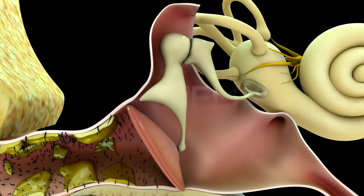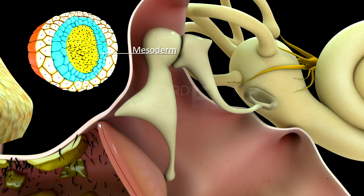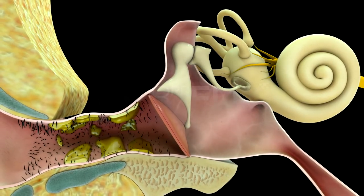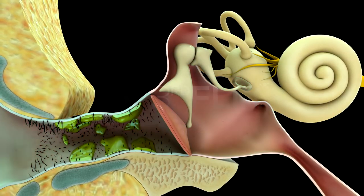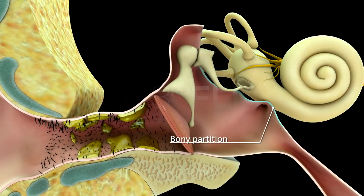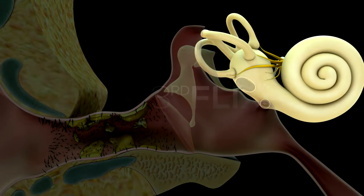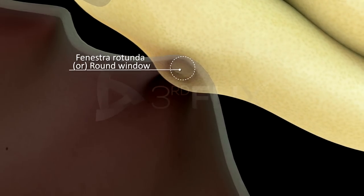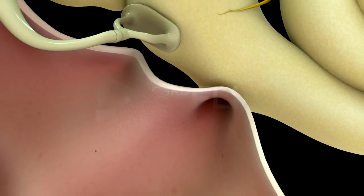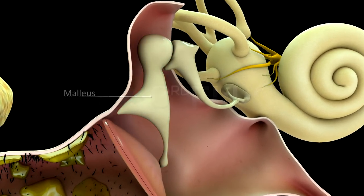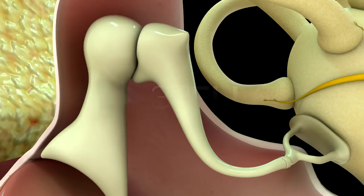The middle ear, or tympanic cavity, is derived from mesoderm. It is a small, air-filled cavity in the temporal bone. The middle ear is separated from the external ear by the tympanum and from the internal ear by a bony partition. This partition has two membrane-covered openings: the fenestra ovalis or oval window, and the fenestra rotunda or round window. The middle ear contains a chain of three bony ossicles: namely the malleus, incus, and stapes.